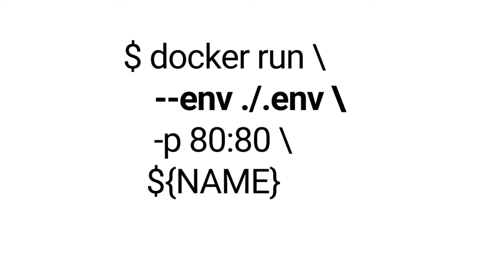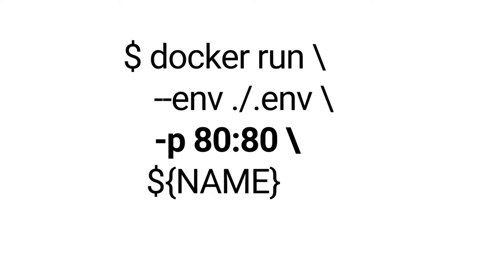To run this container we need to pass a couple of secrets which are environment variables that we specify in a .env file. We also need to do port mapping, which means we map the internal port 80 from inside the Docker container to port 80 on the host, so your Streamlit app is accessible from outside the Docker container. Once you have a containerized app that works locally, you are done — because this is the magic of Docker: if it works on your laptop, it also works in production.